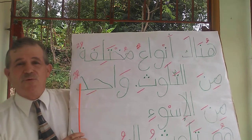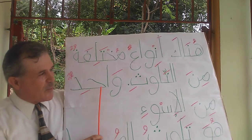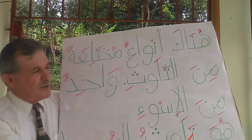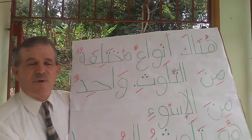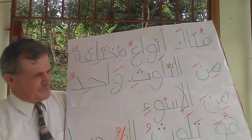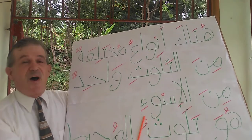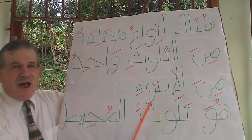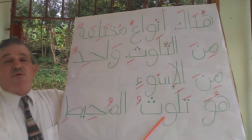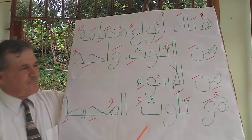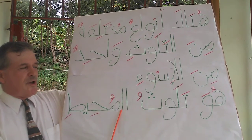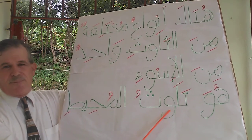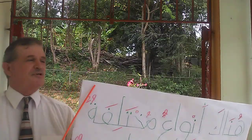'Wahedun' — 'one,' pronouncing the tanwin. 'Wahedun min al-aswa' — 'one of the worst.' Then: 'Huwa talawuth al-muhit' — 'it is pollution of the ocean.' Full phrase: 'Wahedun min al-aswa, huwa talawuth al-muhit' — one of the worst is pollution of the ocean.